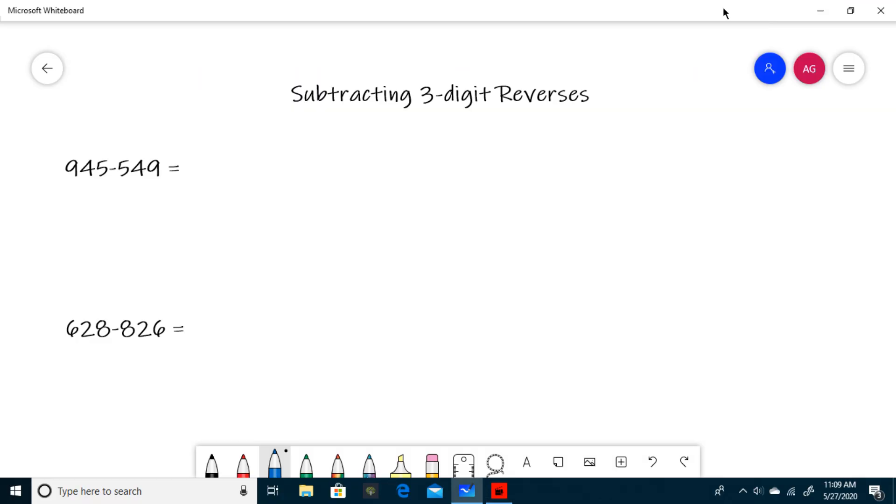Hello, and welcome to Investigative Math. Today we will be learning how to subtract 3-digit reverses. On more recent number sense tests, you will often see questions like these, for example 945 minus 549. These questions are pretty easy to solve without a trick, but there's a much faster way to do these that will save you a few extra seconds. So let's get to it.